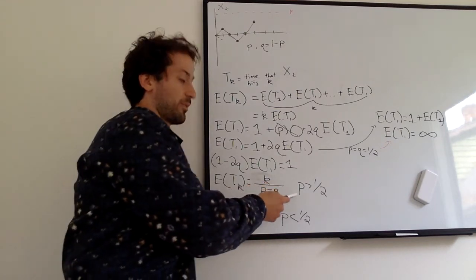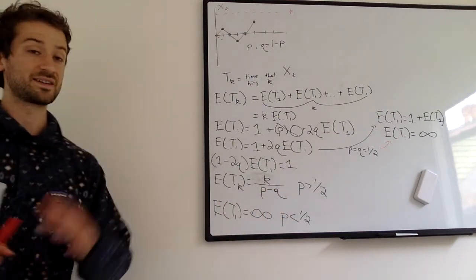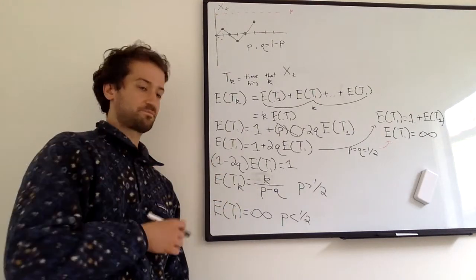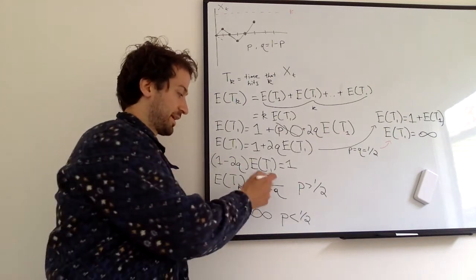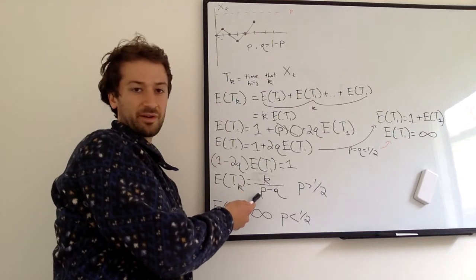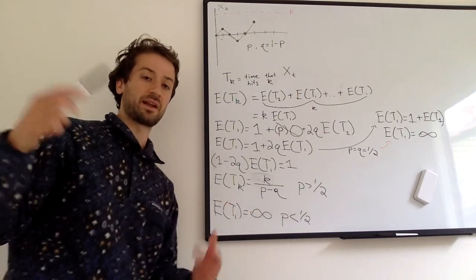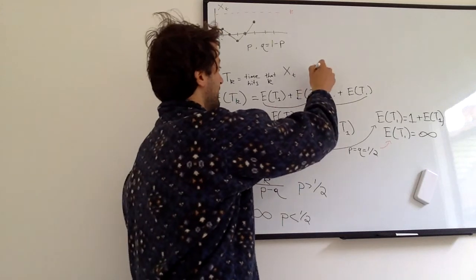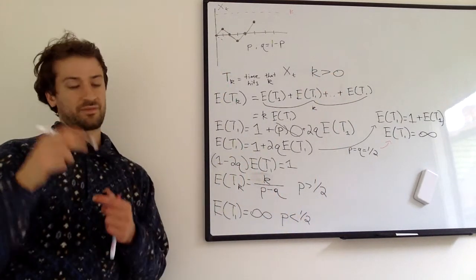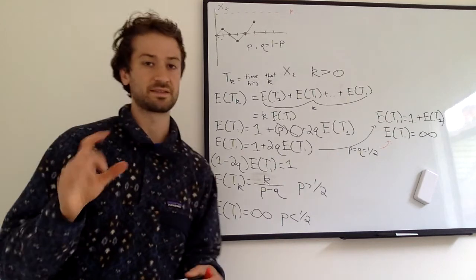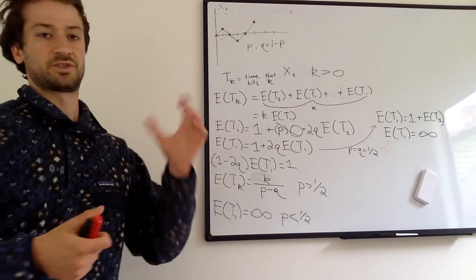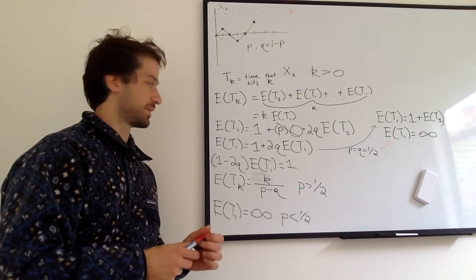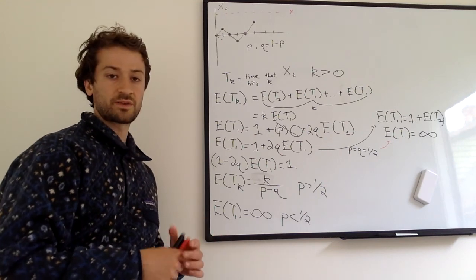When p > 1/2, we're guaranteed to hit any value k at some point, so the expected value is finite. When p < 1/2, there's a non-zero probability we never hit the value — the probability is p/q — which means the expected value is infinite. When p = q = 1/2, we also get infinity, as we saw. Note that this is for k greater than zero. For k less than zero, it's totally symmetric — just flip the axis or switch p and q. Hopefully that explains hitting times for random walks — see you in the next video.